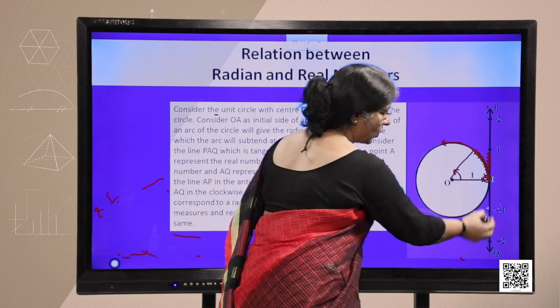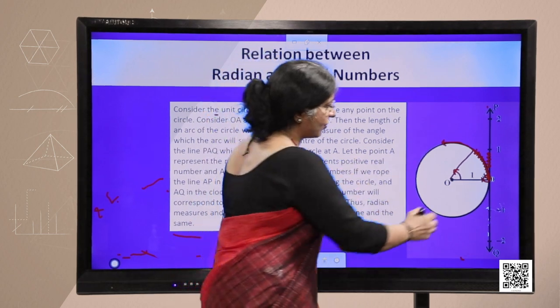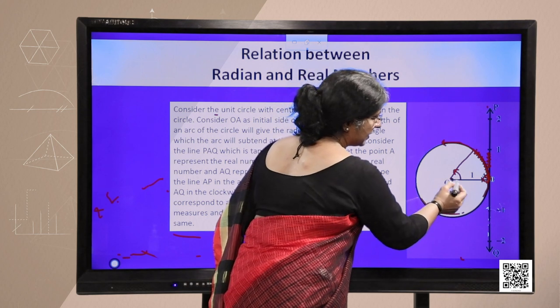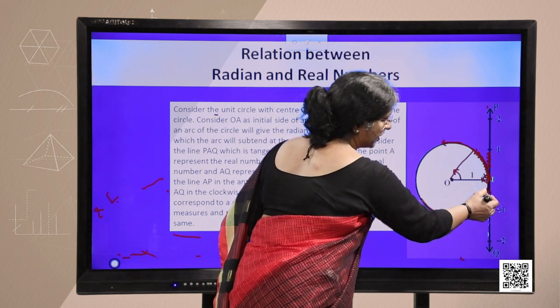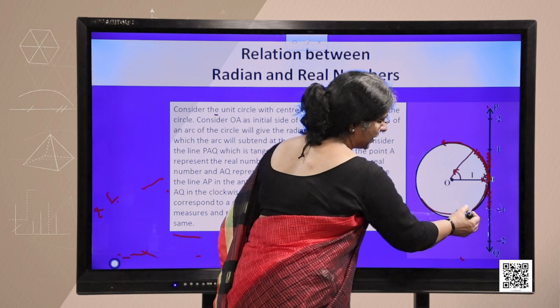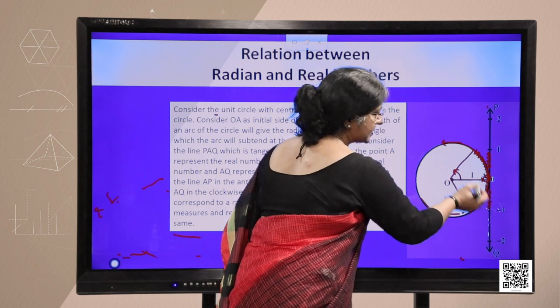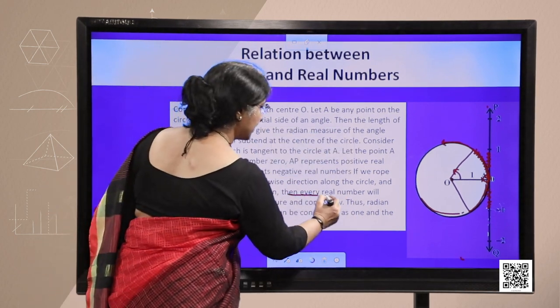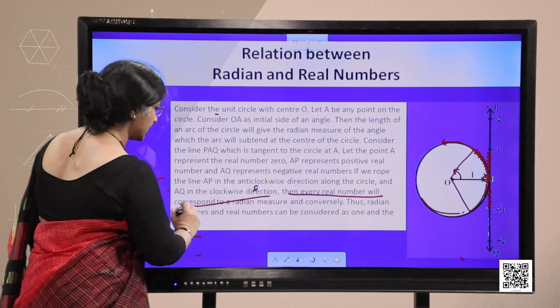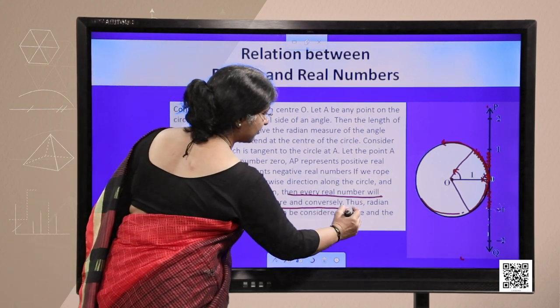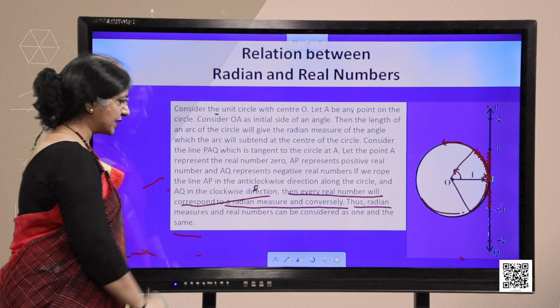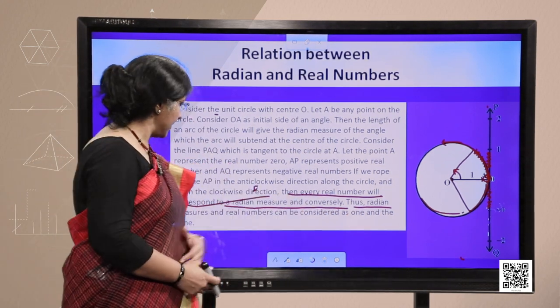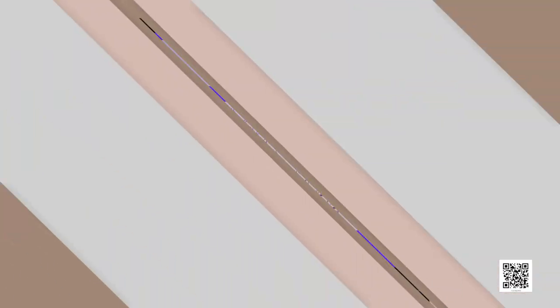And if we rope in OQ in clockwise direction on the circle along the boundary, then every real number will correspond to some radian measure on the circle. So, we can relate that every real number will correspond to radian measure and conversely, thus a radian measure and real numbers can be represented or considered as one and the same.